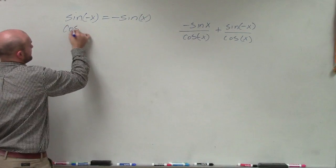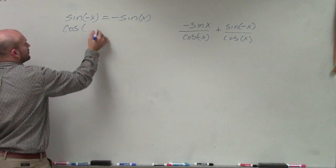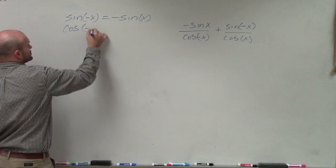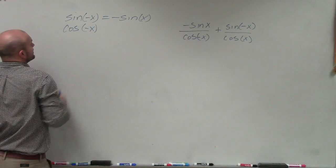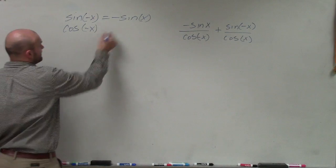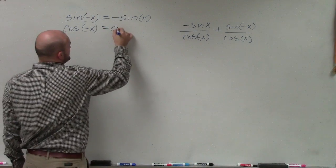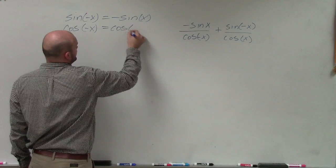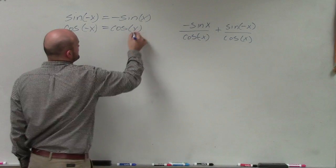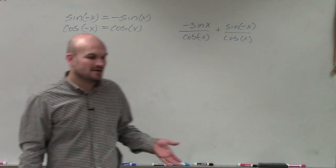But the cosine function, that's actually what we call an even function. So if I have the cosine of negative x, that's actually just going to equal the same thing as cosine of x.